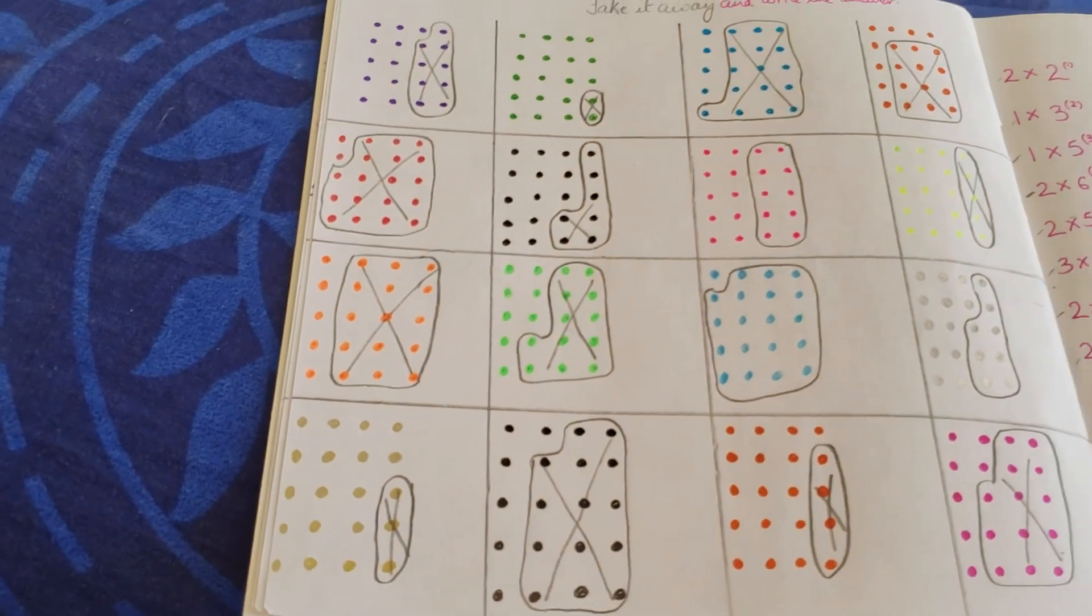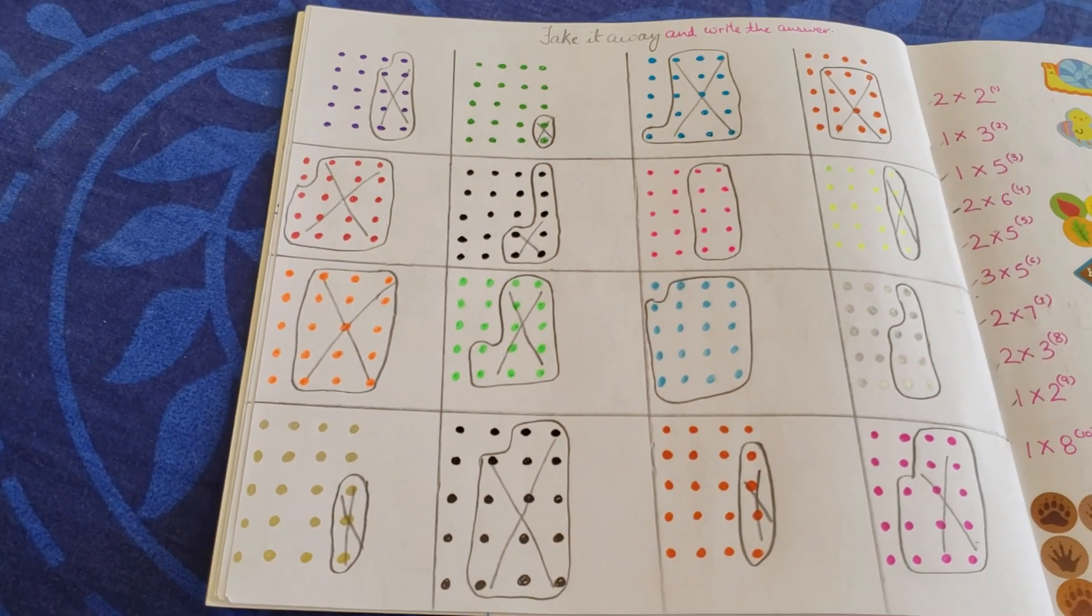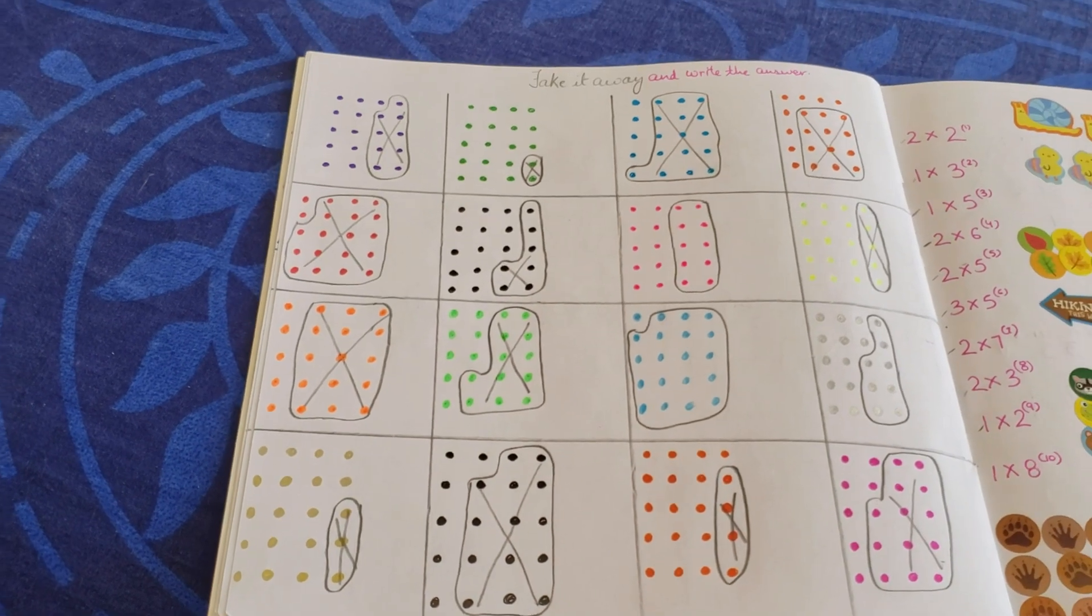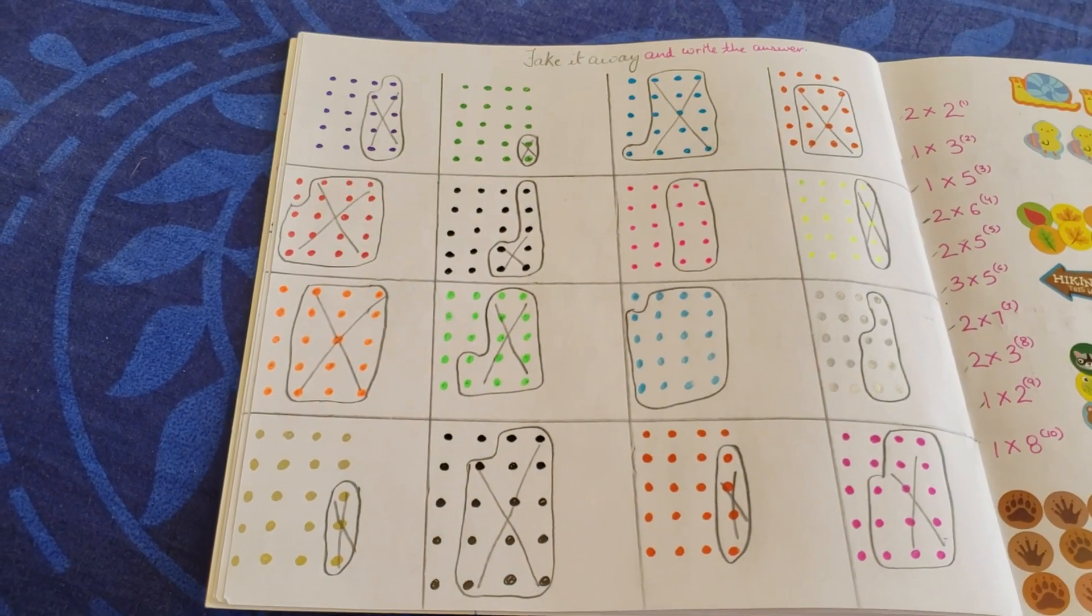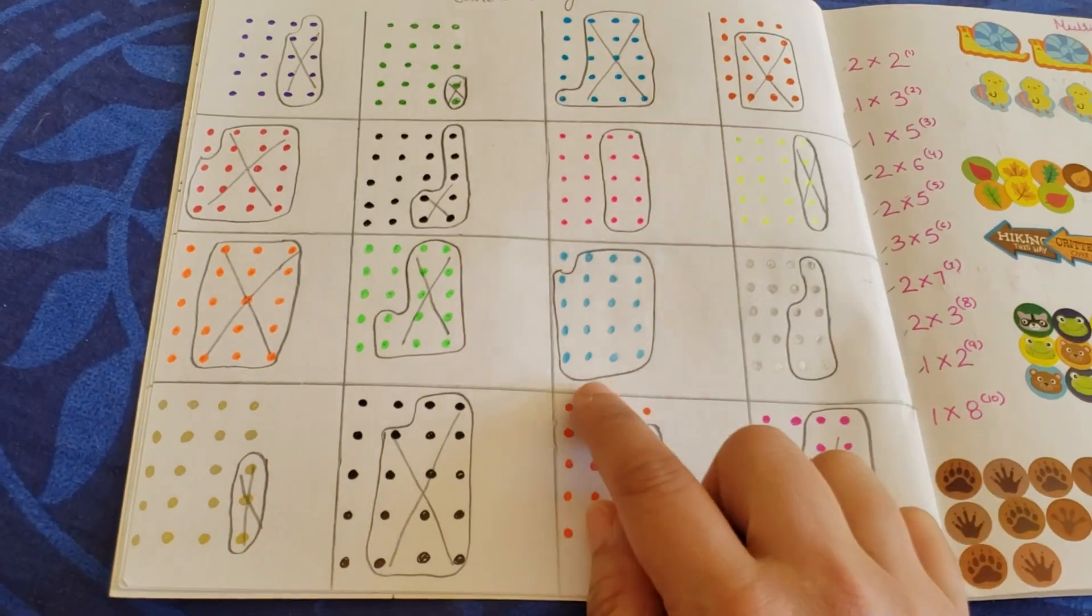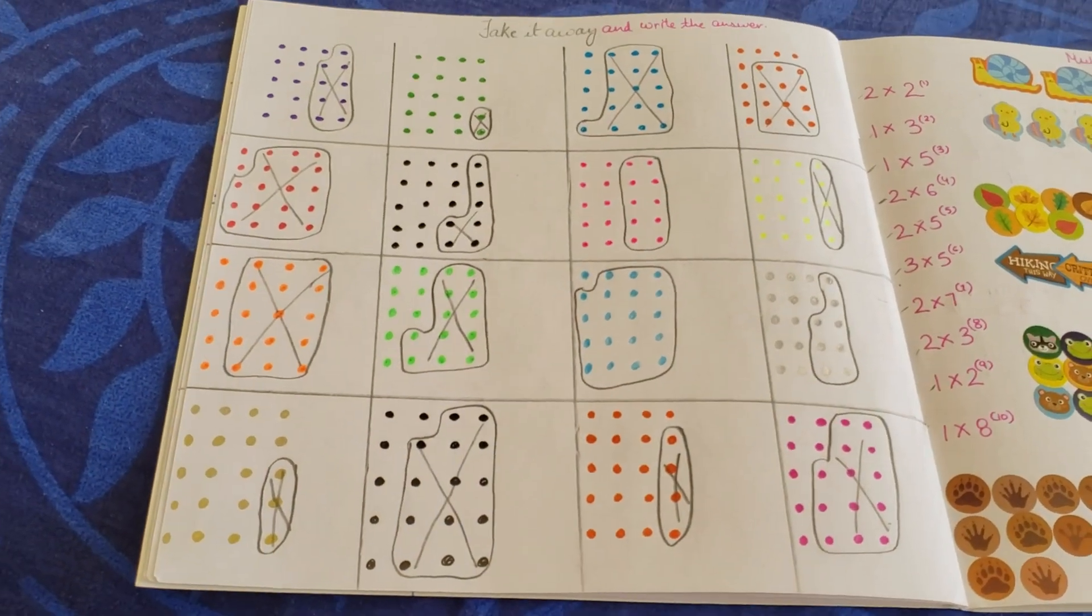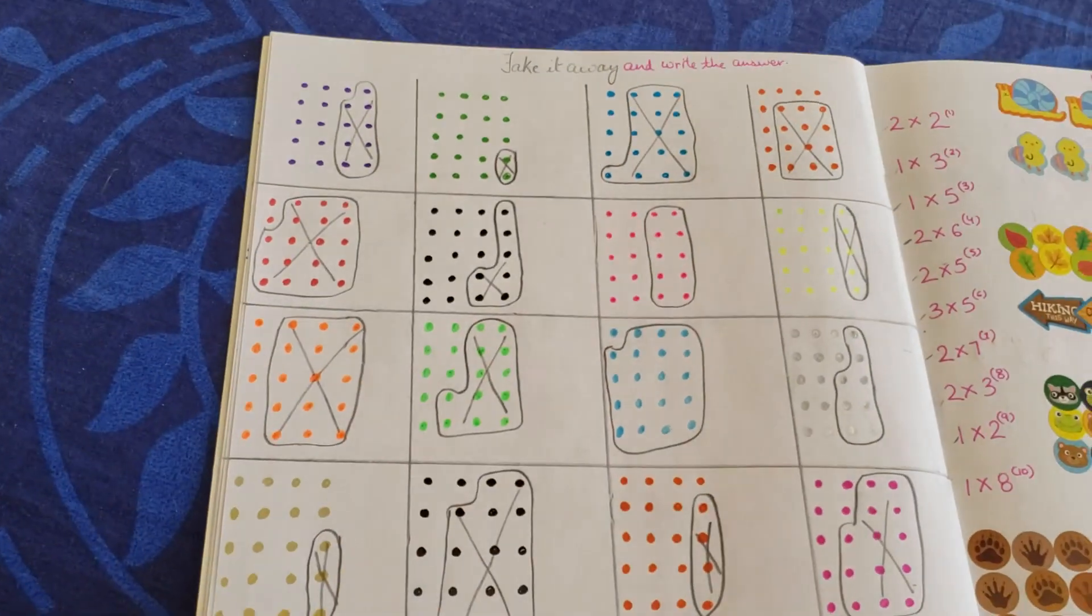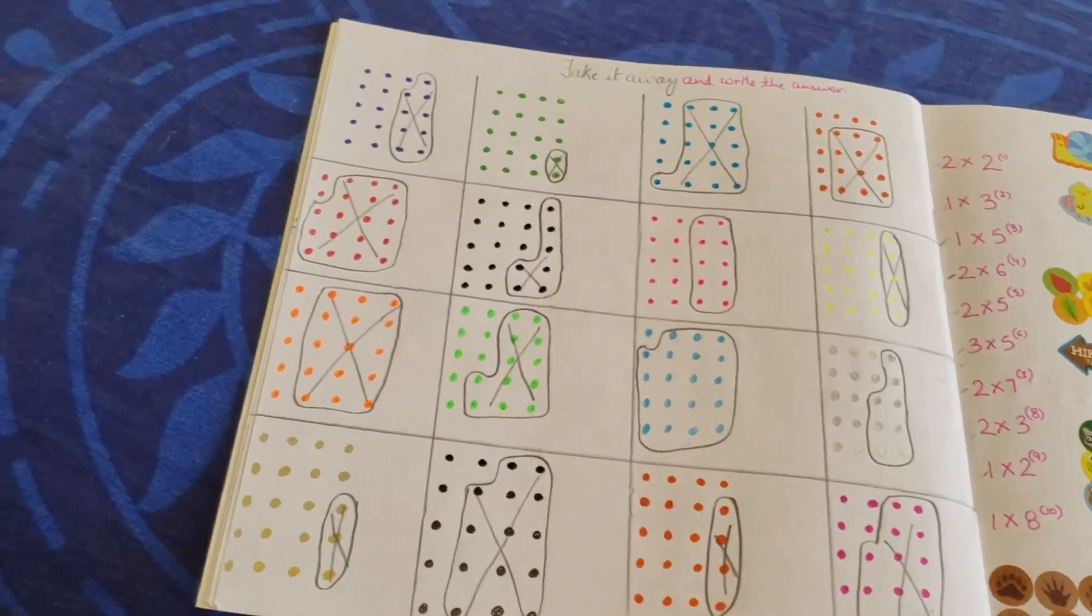Take it away and write the number. You have all these domino's dots here. He needs to tell the remaining numbers. It's primarily subtraction. There are like twenty dots, I think so. Five, ten, fifteen, twenty. Yeah, there are twenty of them. And then I have removed it and he needs to write the answer at the place that is given right here. So I think it will be pretty fun for him.